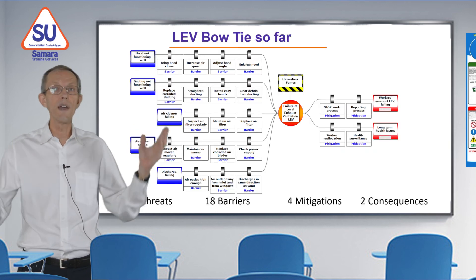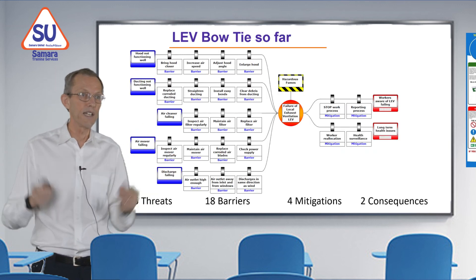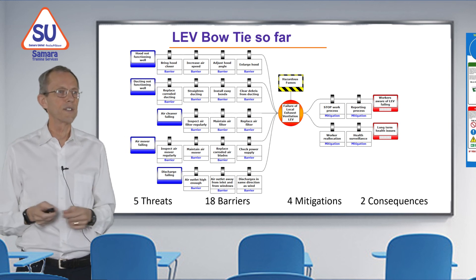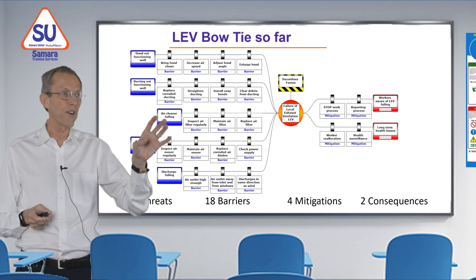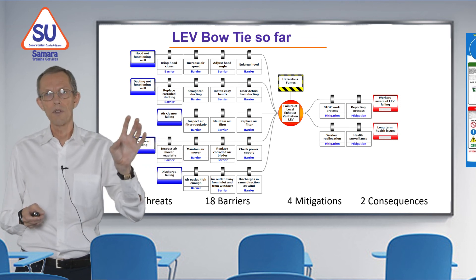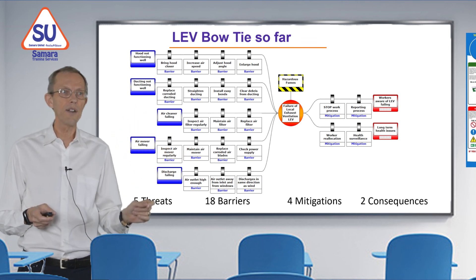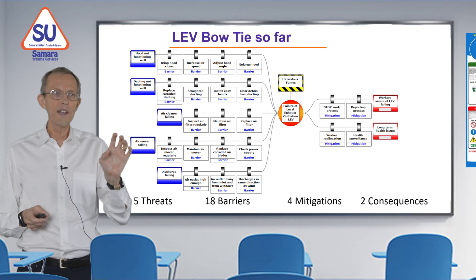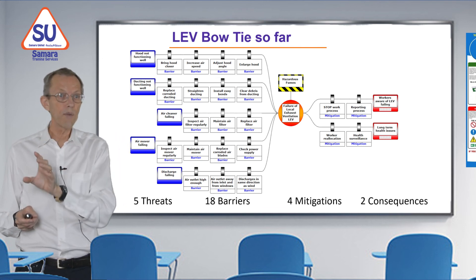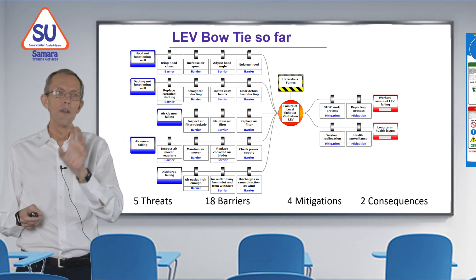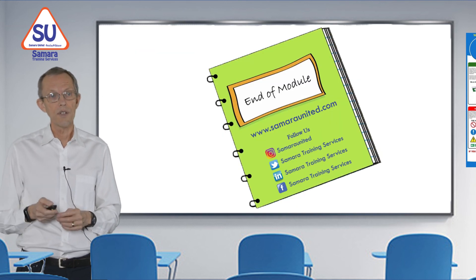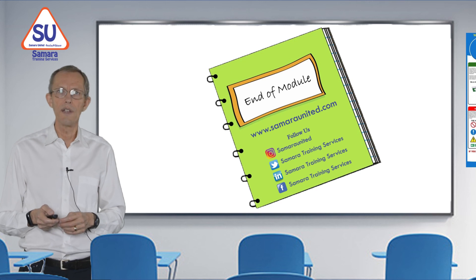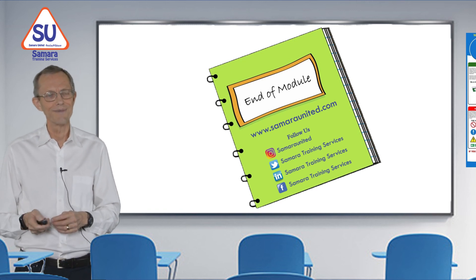Looking at the completed bow tie, we have five threats — the blue ones — controlled by 18 barriers. If they fail, we have two consequences — the red ones — reduced by four mitigations. You can follow us on Instagram, Twitter, LinkedIn, and Facebook. Thank you.